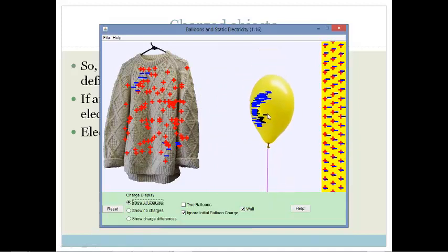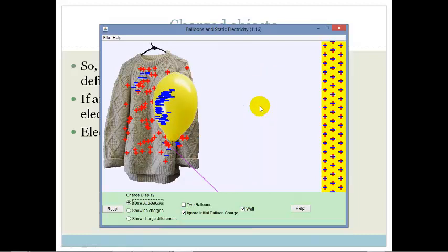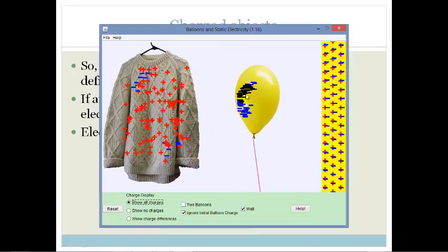I'm holding the balloon in the middle because it's going to get attracted to that jersey. So that's what happened. We can transfer the electrons. Now you'll see that the jersey is now positively charged and the balloon is negatively charged. That means that they are attracted to each other.